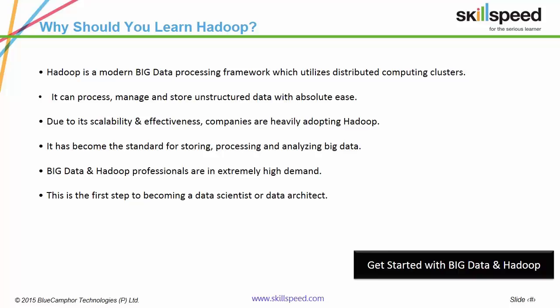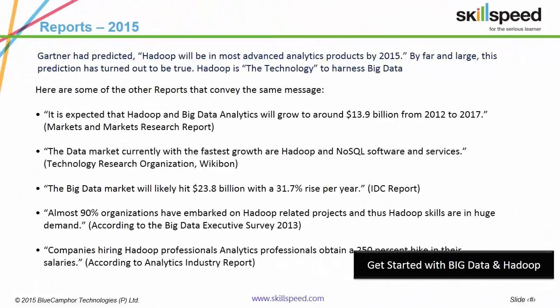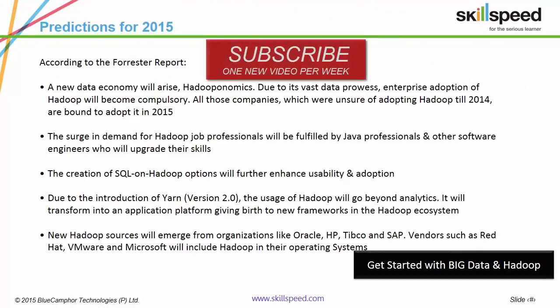Due to this, organizations like Amazon, Yahoo, Google, Apple and Netflix are moving to Hadoop. This has resulted in a great demand for Hadoop professionals in the technology market. The Big Data market is growing at a rate of 31.7% every year and almost 90% of organizations have or will embark on Hadoop-related projects. If an IT professional upgrades to Hadoop, he can expect a salary hike of up to 250%. According to Forrester, all organizations unsure of adopting Hadoop in 2014 are going to adopt this technology in 2015, giving rise to a new economy coined Hadooponomics.